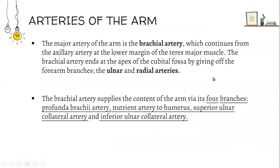Arteries of the arm. The major artery of the arm is the brachial artery, which continues from the axillary artery at the lower margin of the teres major muscle. The brachial artery ends at the apex of the cubital fossa by giving off the forearm branches, the ulnar and radial arteries. The brachial artery supplies the content of the arm via its four branches: profunda brachii artery, nutrient artery to humerus, superior ulnar collateral artery, and inferior ulnar collateral artery.